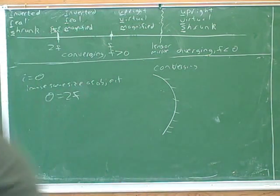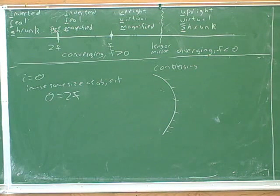So now we can answer a lot of questions just based on our chart. So for example, the questions were things like, where should the object be placed? Well, it should be placed at twice the focal point.